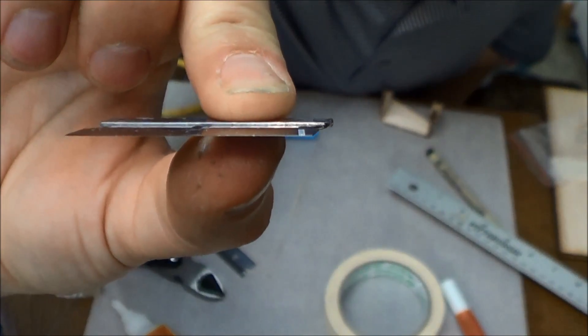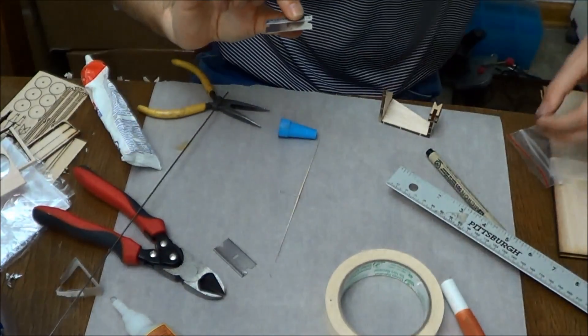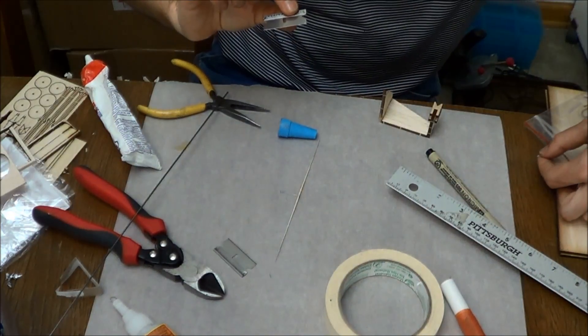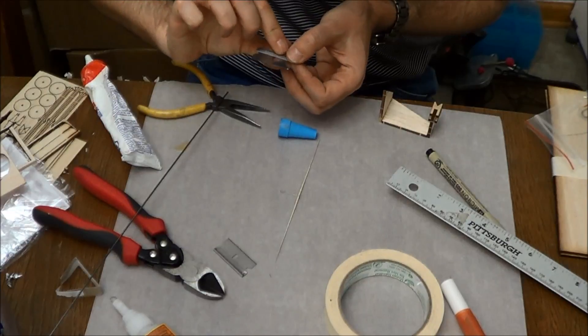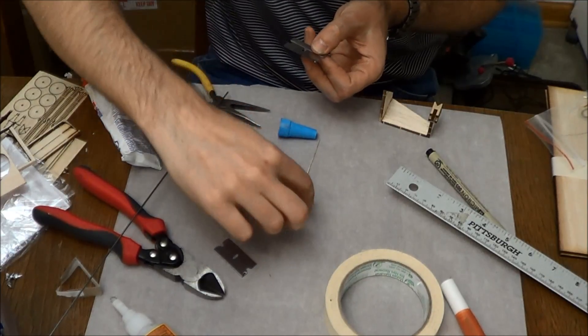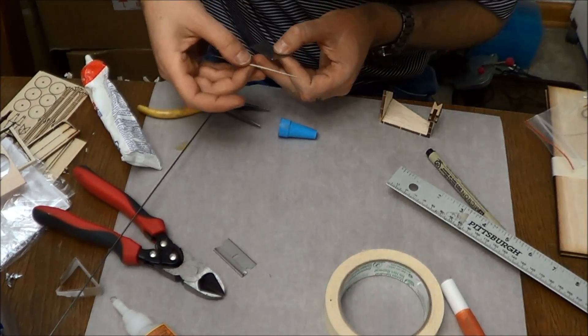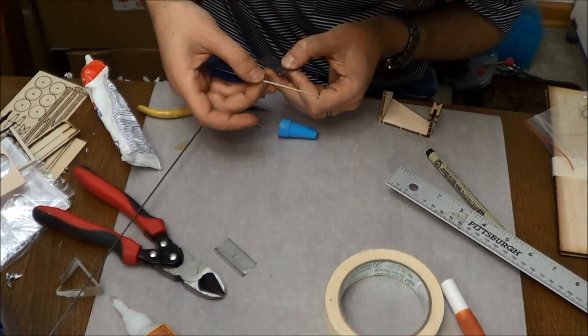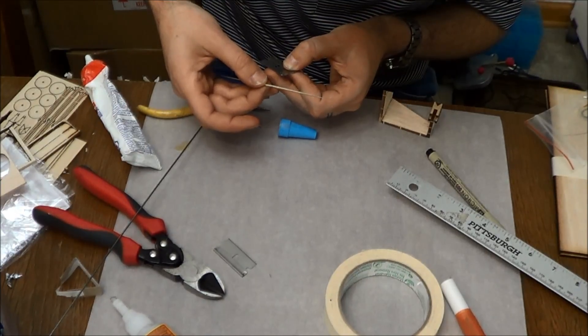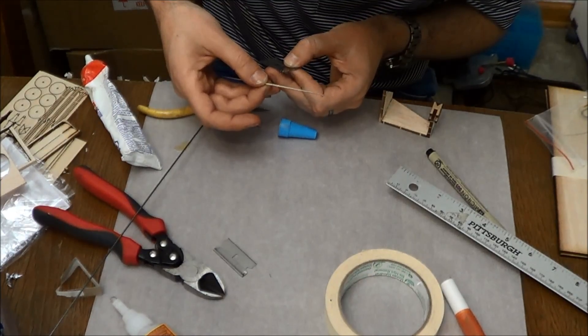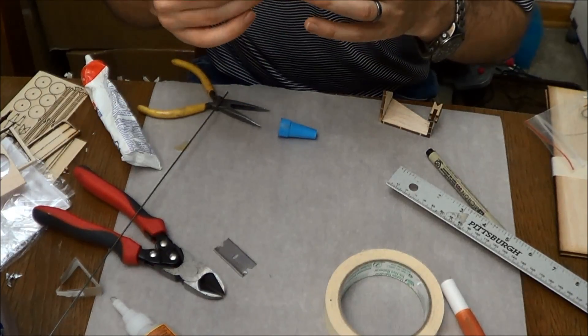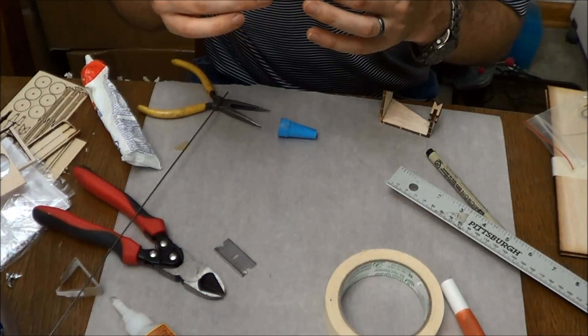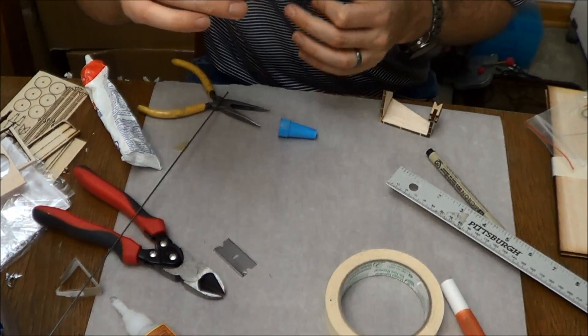The reason we include so much more than you actually need is because chances are, like me, you will lose the first few pieces. Maybe even the first few hundred. And you're going to go cross-eyed attempting to slide this onto the shaft. But the bottom line is, now it's on there.